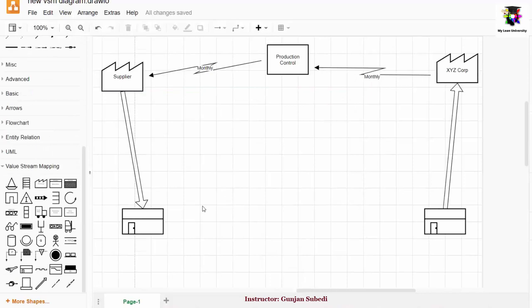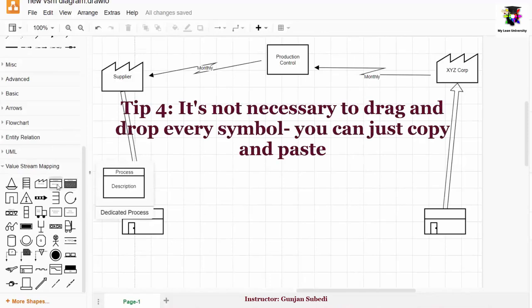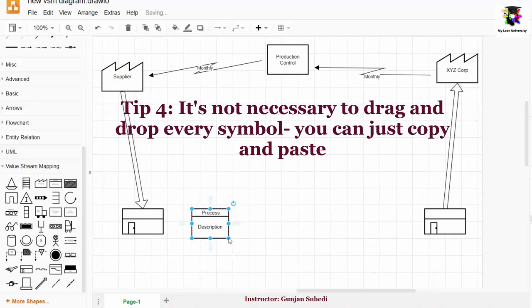Now the fourth tip that I want to give you is about drawing the process information box. The process information box is here. So while drawing the process information, you should decide how many processes are there. And then we can adjust the size of these symbols. Note that, as there may be many process description box in any value stream map.